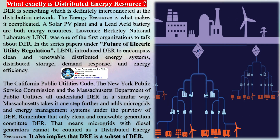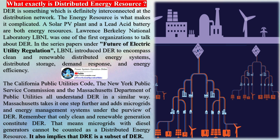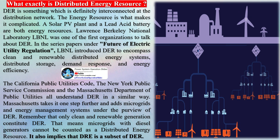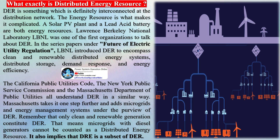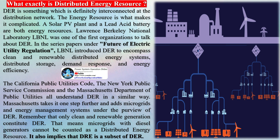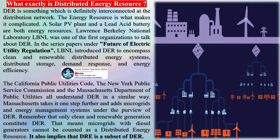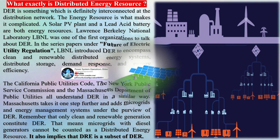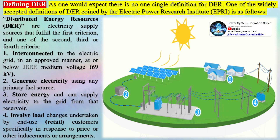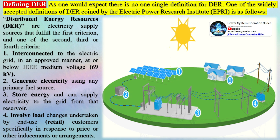From the perspective of network theory, decentralized is actually a subset of distributed. The electrical distribution system, typically 69 kV or below in voltage, is what is referred to as the distributed network. DER is something which is definitely interconnected at the distribution network. The energy resource is what makes it complicated — a solar PV plant and a lead-acid battery are both energy resources.